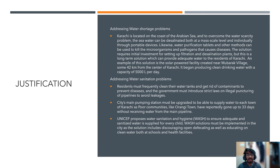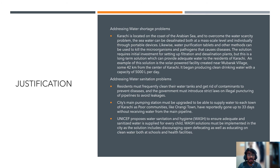This solution has already been implemented near Karachi — there is a solar-powered facility that has begun to produce clean drinking water of around 5,000 liters per day. More of these plants can help overcome the water shortage problem in Karachi.